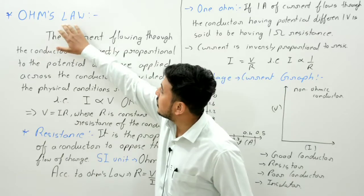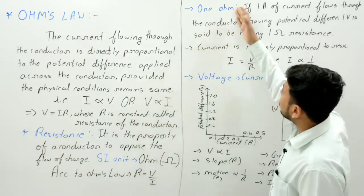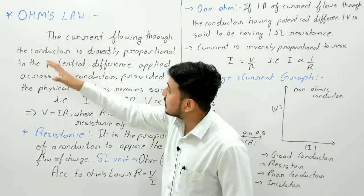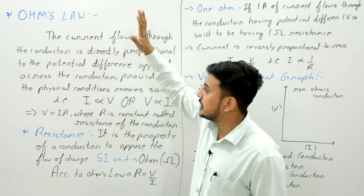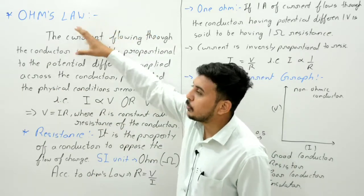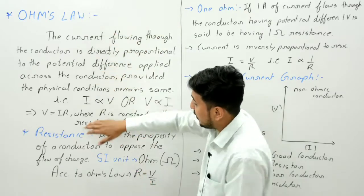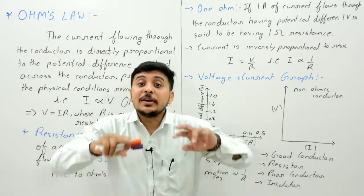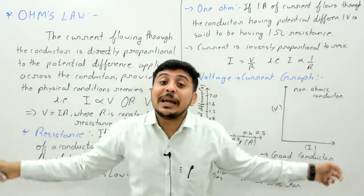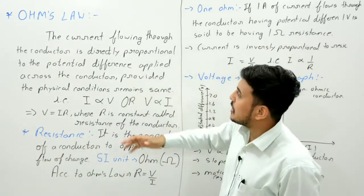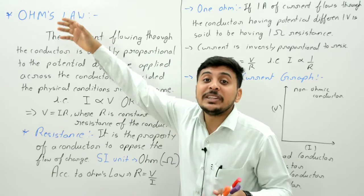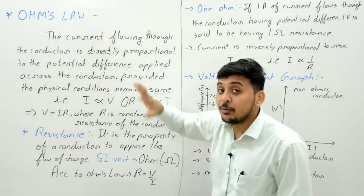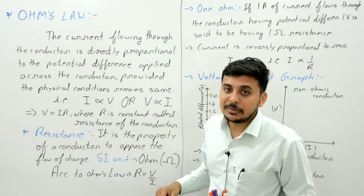There are a few questions related to this topic: Ohm's Law, resistance, one Ohm, voltage-current graph — each of these can be asked individually. Ohm's Law can be asked for 2 marks, resistance for points, voltage-current graph separately, or the whole question can be asked for 4 or 5 marks — 'Explain Ohm's Law in detail with voltage-current graph.' So if it is 2 marks, I will tell you how to write it; if it is 4 or 5 marks, you can add more for the board.